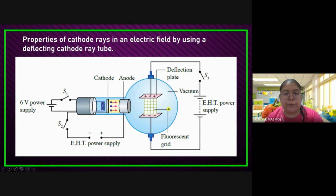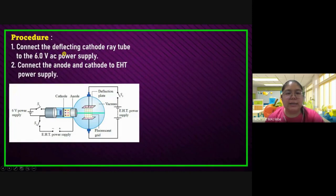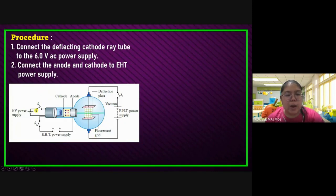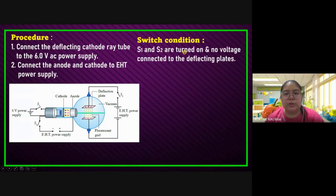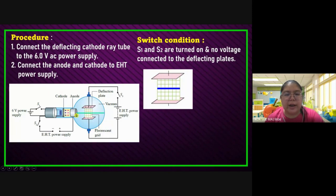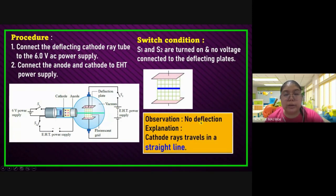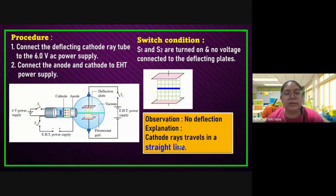Now we go and see. First, connect the deflecting cathode ray tube to the six volts, then connect the anode and cathode to the EHT power supply. We got three switches: S1, S2, and S3. S1 and S2 are turned on — no voltage connected to the deflecting plate because S3 is still open. So what you can see: the ray goes straight. Nothing happens — the cathode ray just goes straight. Observation: no deflection. Explanation: the cathode ray travels in a straight line because inside there is no air molecule to disturb. This is the first property of the cathode ray — it moves in a straight line.